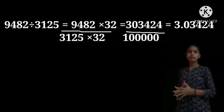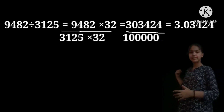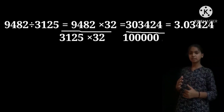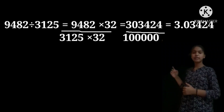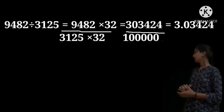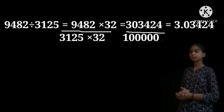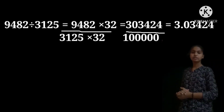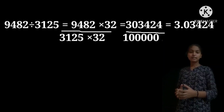Let us see dividing any number by 3,125. Let us see one example here: 9,482 divided by 3,125. Let us multiply 32 to the numerator and denominator: 9,482 into 32, divided by 3,125 into 32. Let us multiply: 9,482 into 32 is 303,424, and 3,125 into 32 is 1 lakh. We should divide them. I think you understand this problem.